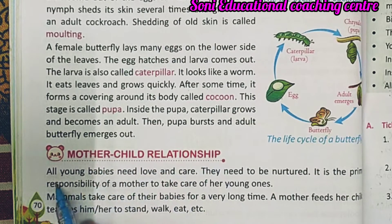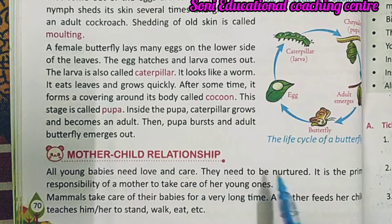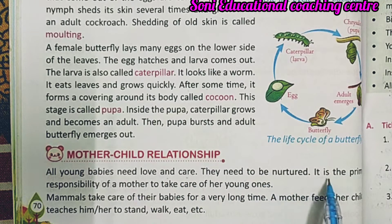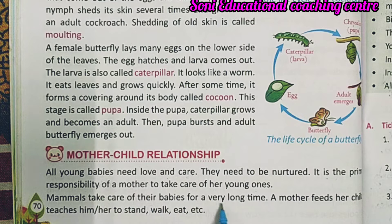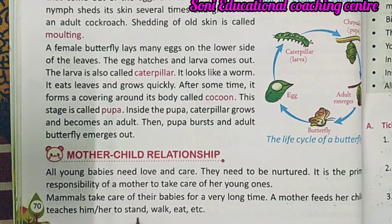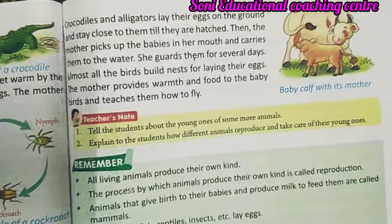Mother-child relationship: all young babies need love and care — जितने भी बच्चे होते हैं, उनकी प्यार की और देखभाल की जरूरत होती है। It is the prime responsibility of a mother to take care of her young ones. Mammals take care of their babies for a very long time. The mother feeds her child, teaches him how to stand, walk, eat, etc. — माँ अपने बच्चे को खाना खिलाना, खड़ा होना, और चलना सिखाती है।